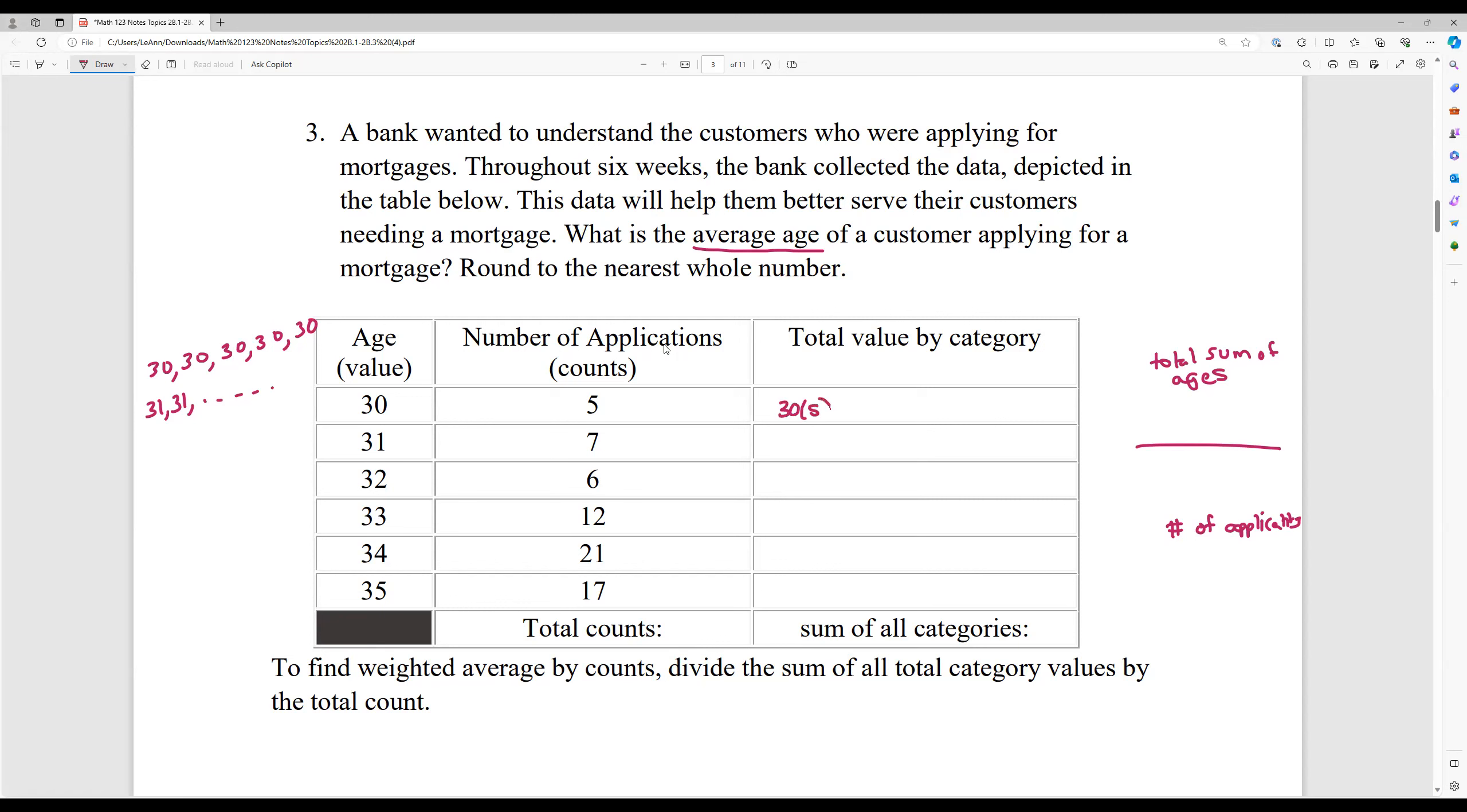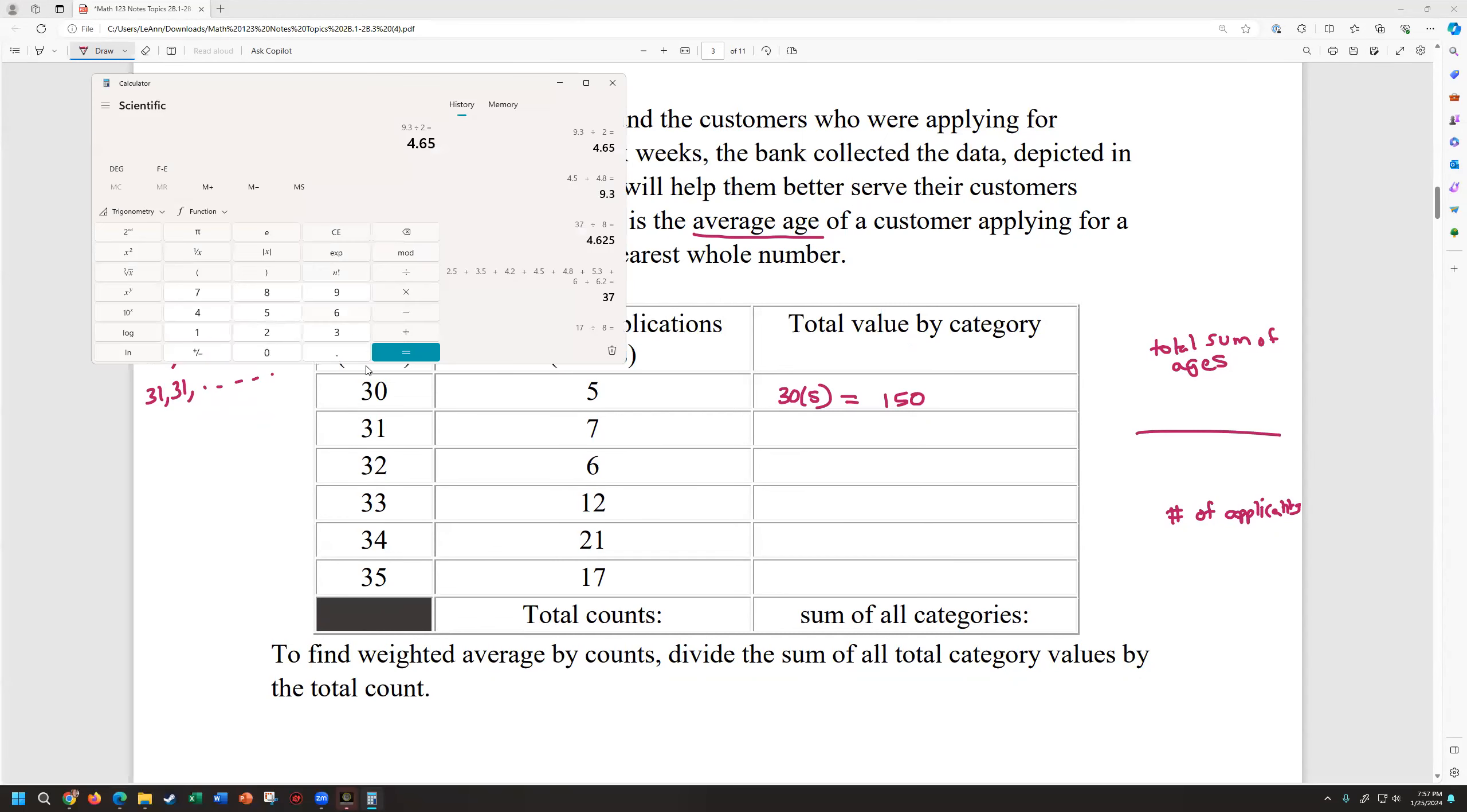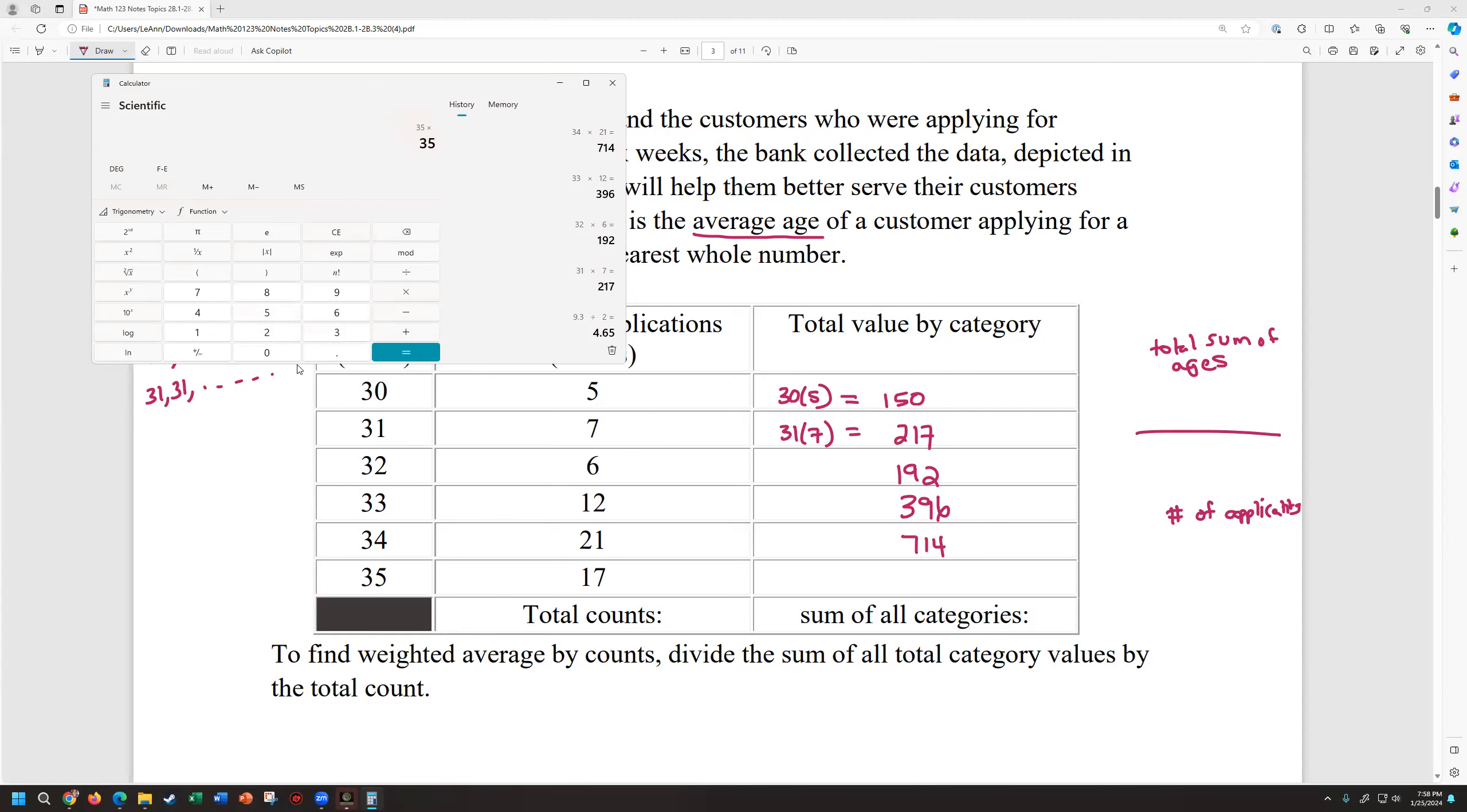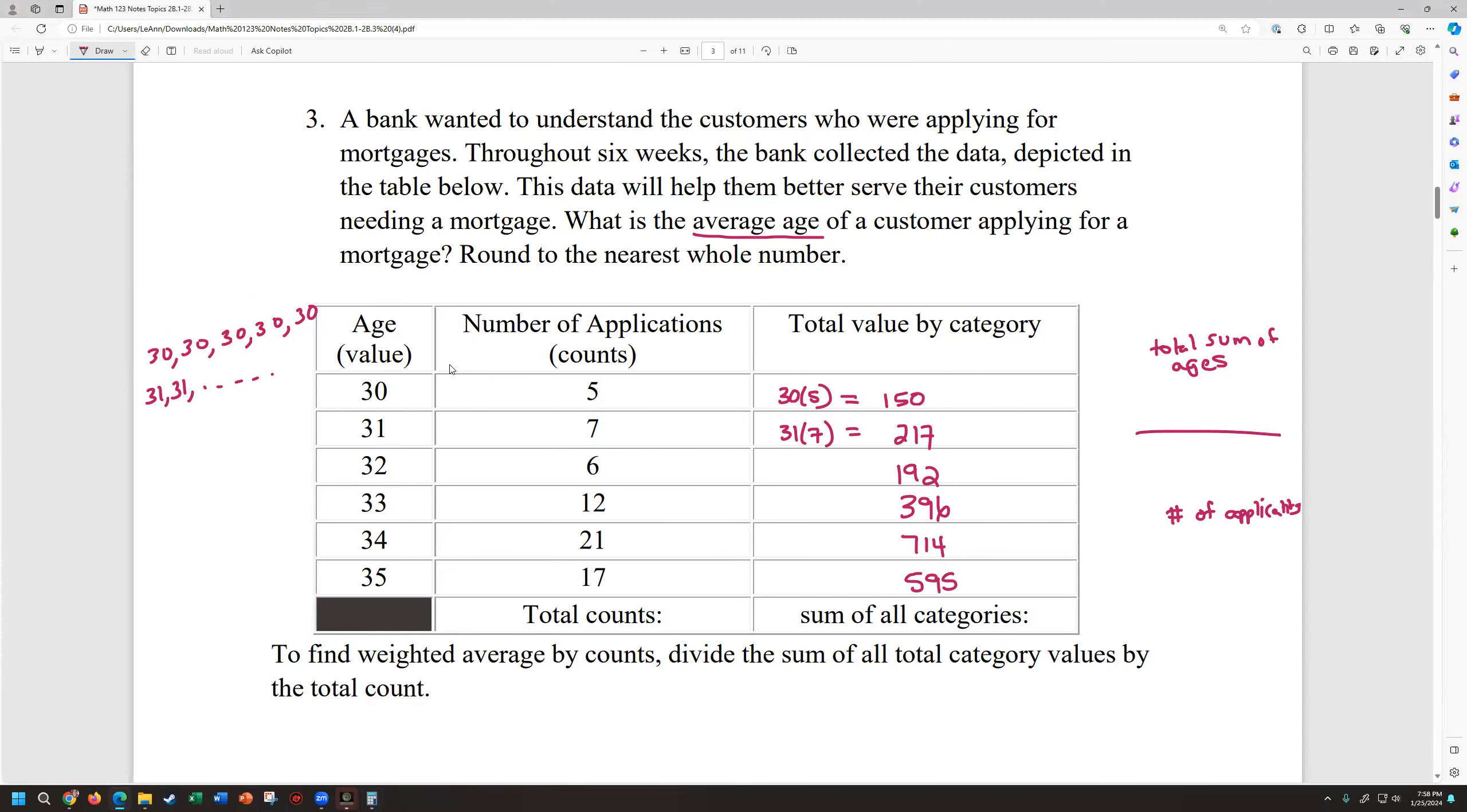Now, the total value by category when you're doing it by counts is just multiplying the 30, which is the value times the counts. Because if I added the five 30 year olds together, that's the same thing as multiplying five by 30. So 30 by five or five by 30, however you want to write the multiplication is 150. So let me make sure I share my calculator so we can quickly do the rest of these. So we're just multiplying the age and the counts together. So 31 times seven is 217. I'll write at least that one there. Not going to write all the steps for each of the multiplication parts, but it's 32 times six. So that's 192, 33 times 12, which is 396. 34 times 21, that's 714. Remember that represents 21 applicants came in that had an age of 34. If we added all of their ages up, that adds up 714.